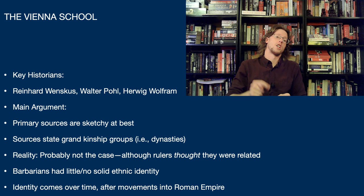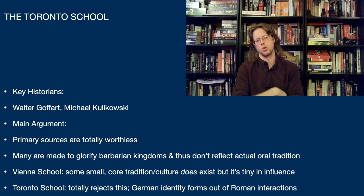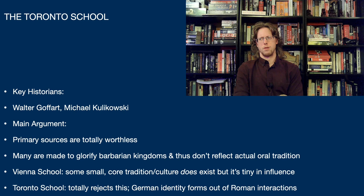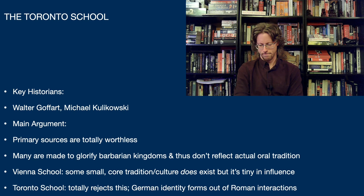The Toronto School takes a more extreme approach: the primary sources are basically totally worthless. Many are made to glorify barbarian kingdoms and thus don't reflect actual oral tradition, so we can't use them at all. While the Vienna School argues there was still probably a core around which people constructed identities, the Toronto School totally rejects that and sees barbarian groups moving into the Roman Empire as an amorphous mass. They also don't necessarily view migrations as being all that large. In some ways, the Toronto School is an overreaction to Nazi ideology and the ways that culture history was used in the 20th century to justify ethnic cleansing and the construction of states.